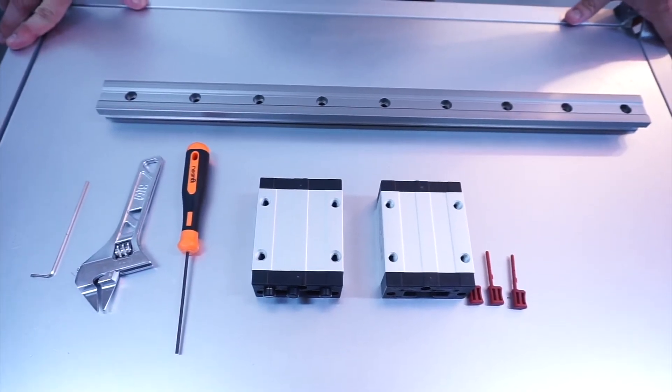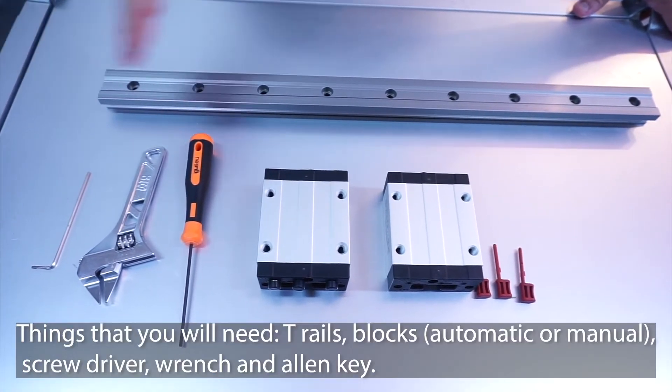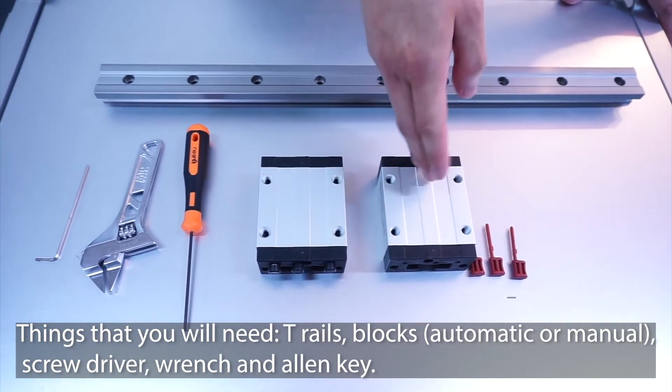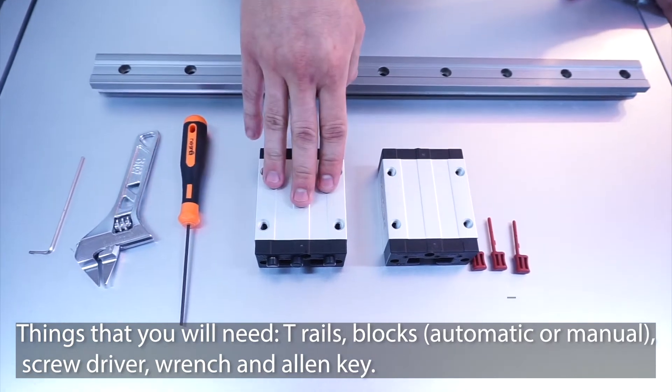Now, to assemble our DryLint system, we need the T-rails, we need the blocks, which is either the automatic blocks or the manual blocks.